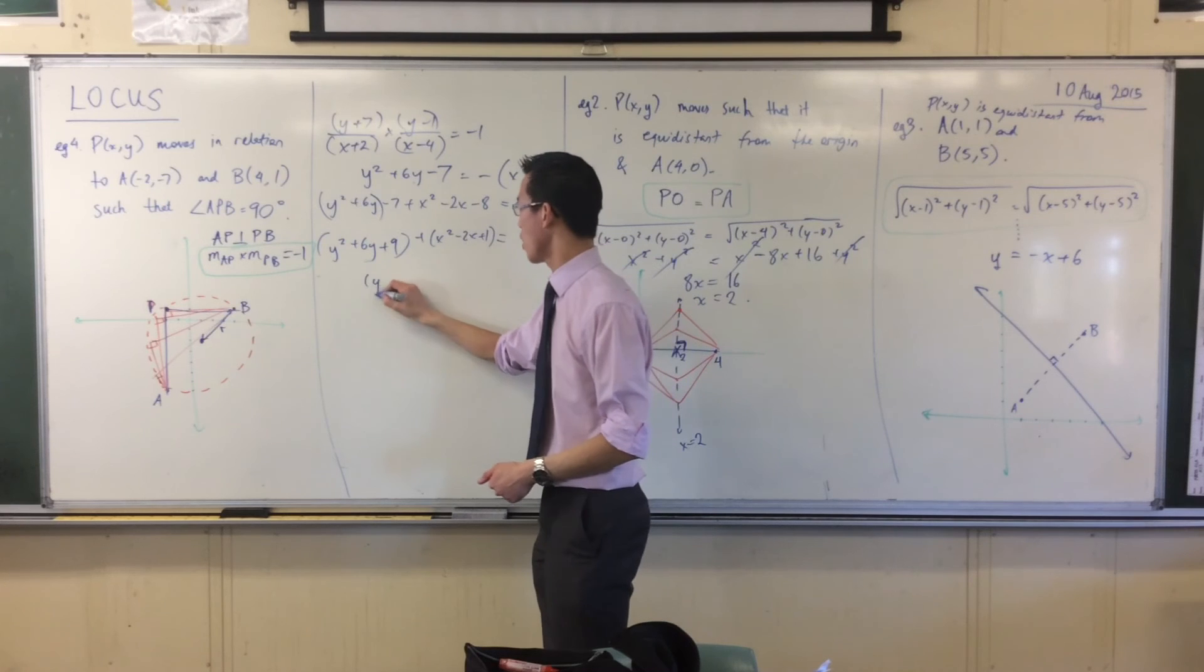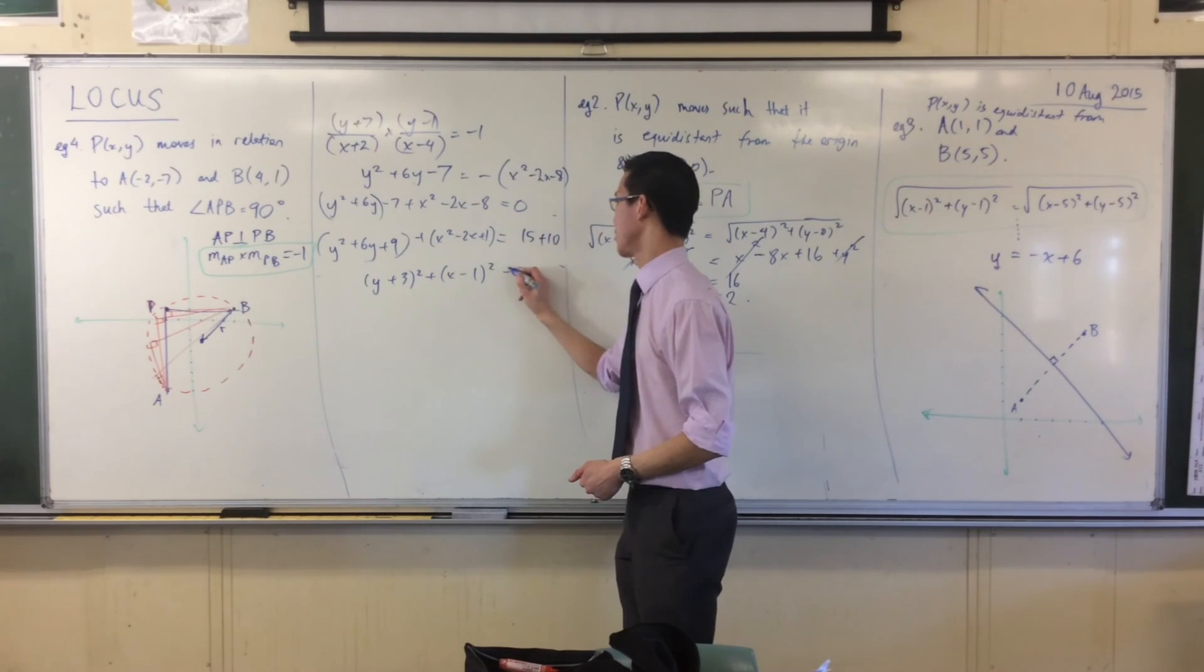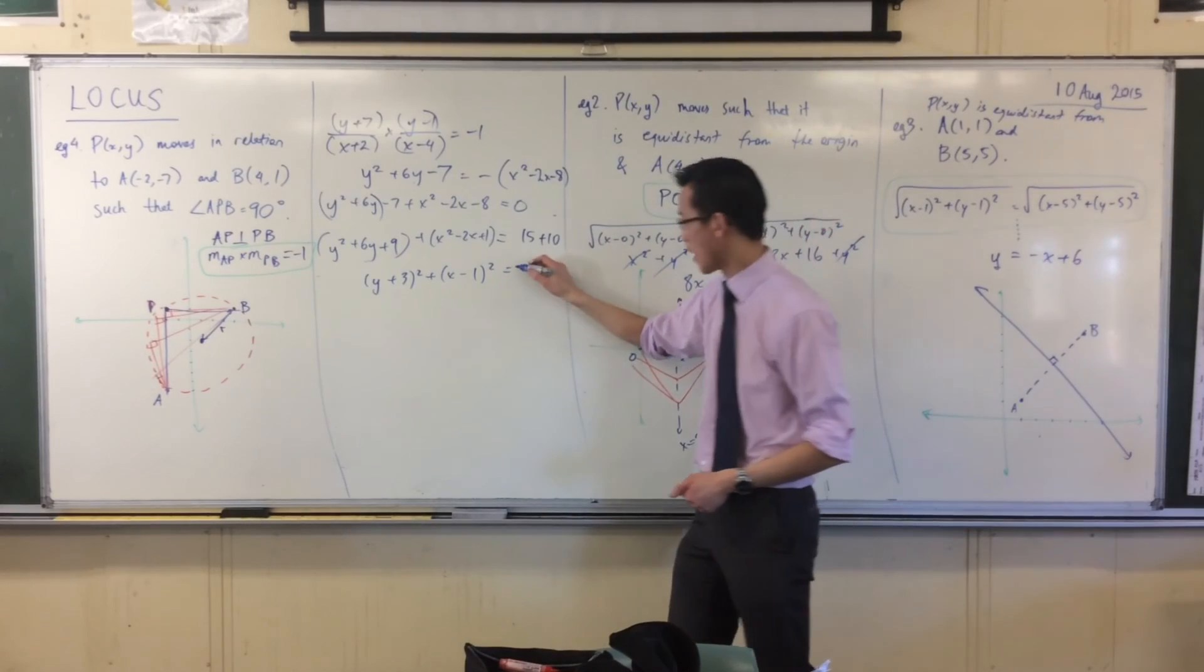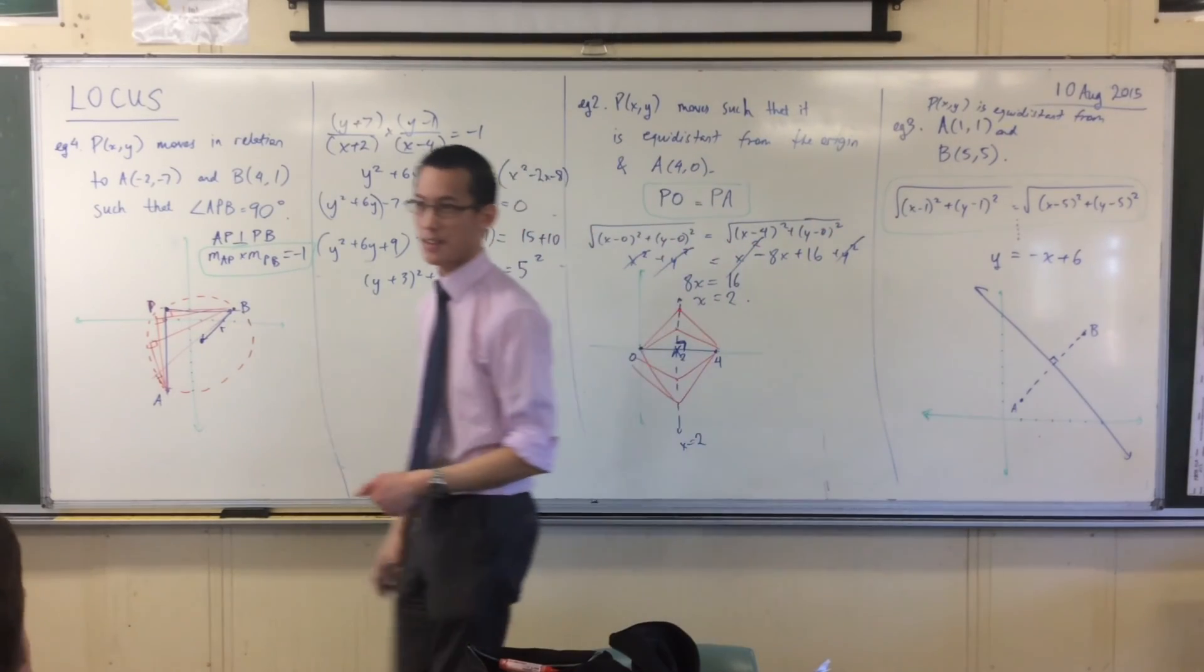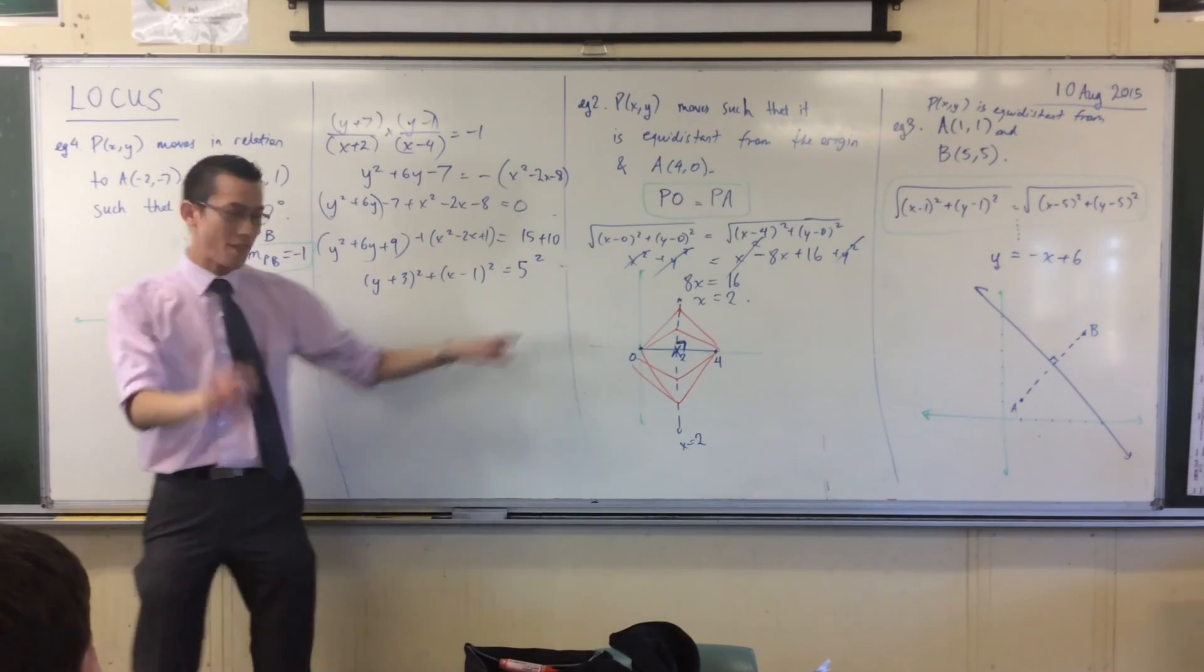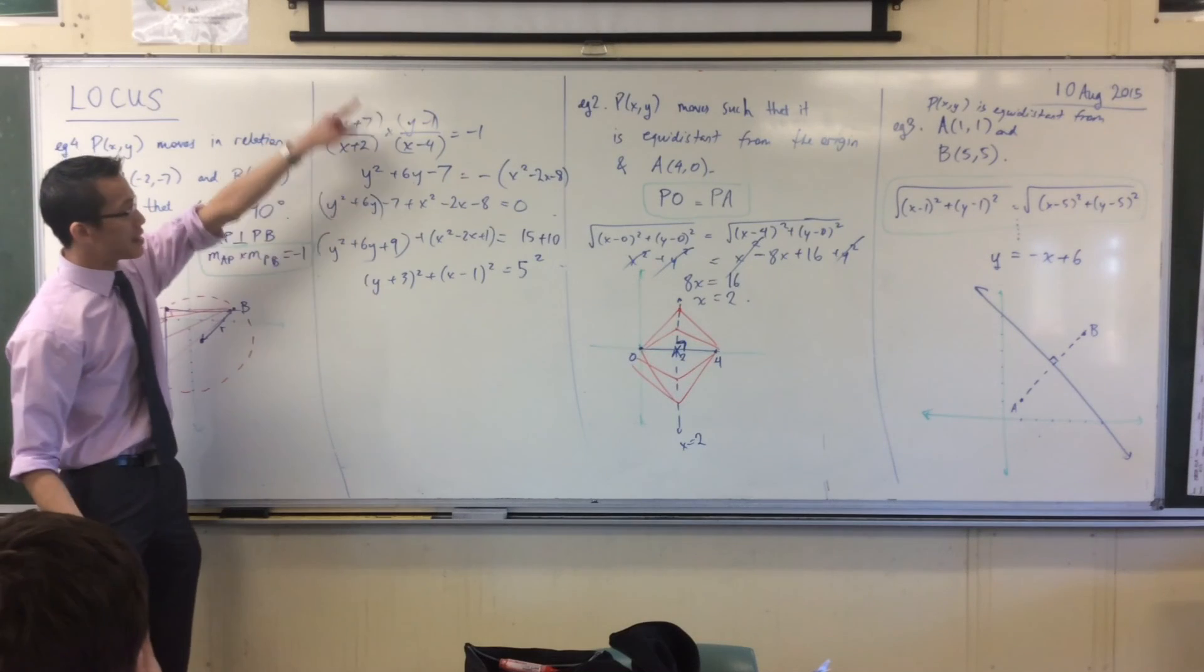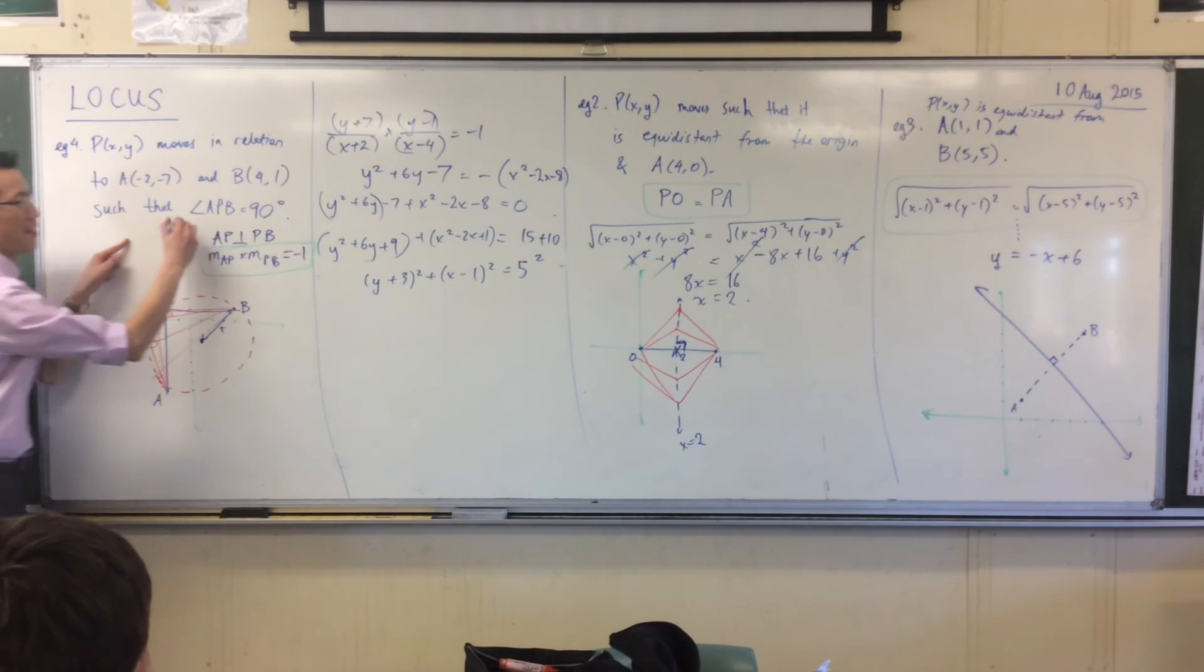And now I've got my perfect squares. y plus 3. x minus 1. What's this guy? That's 5 squared, isn't it? So I have my center, and I have my radius, which of course you could have found by doing midpoint, and then by doing the distance formula, but this way directly gets at this property that they gave to us.